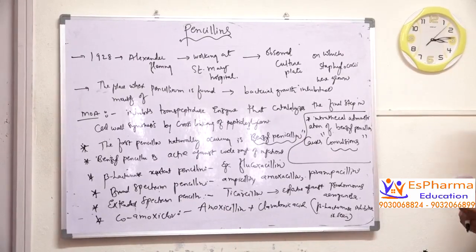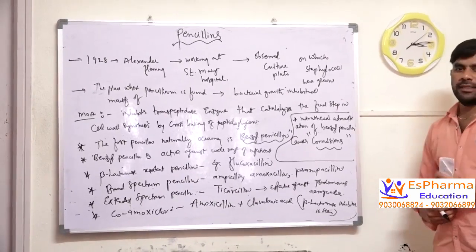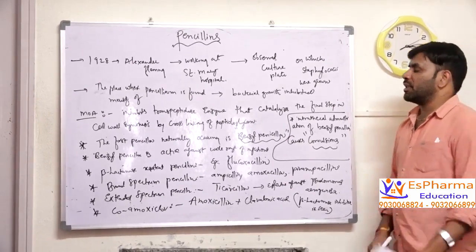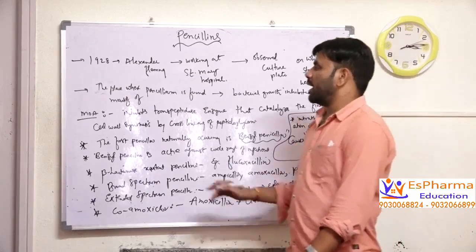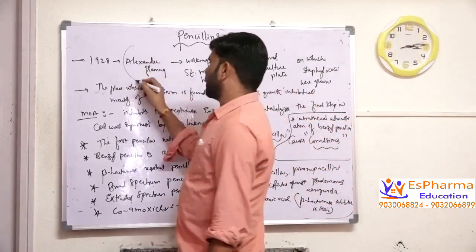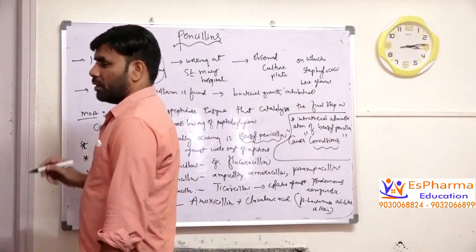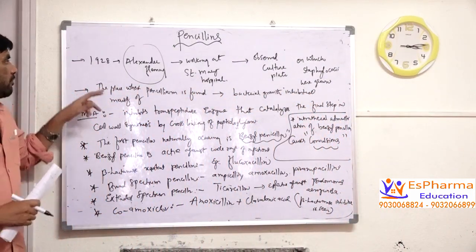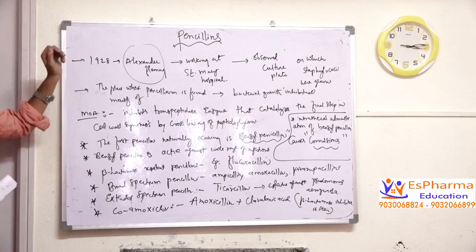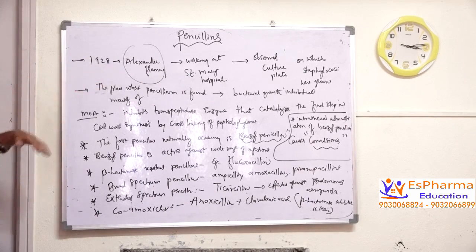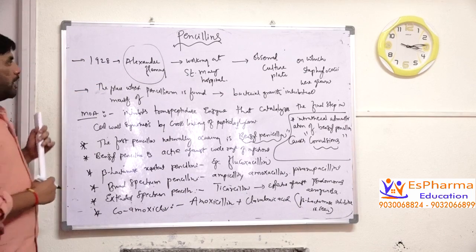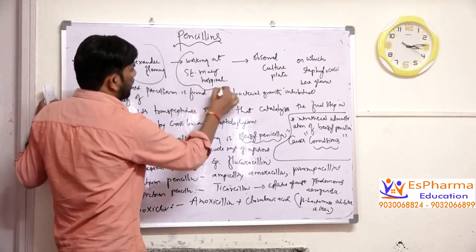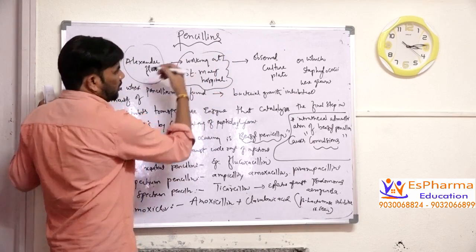How was penicillin identified? It was a small experiment conducted by Alexander Fleming. Penicillin was discovered in the year 1928 by Alexander Fleming when he was working at St. Mary's Hospital.